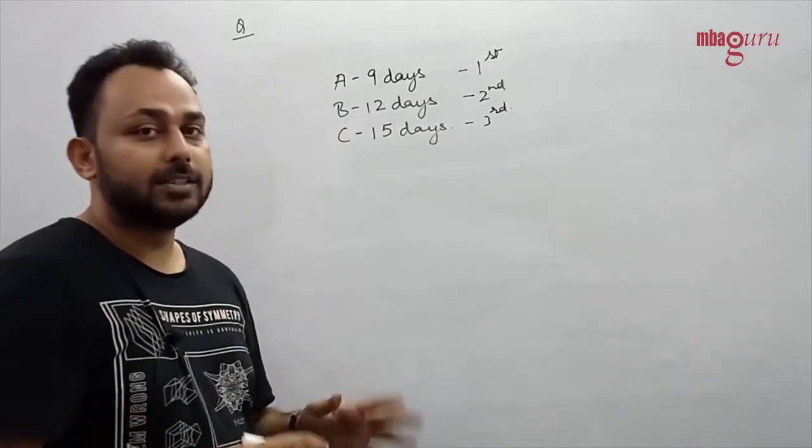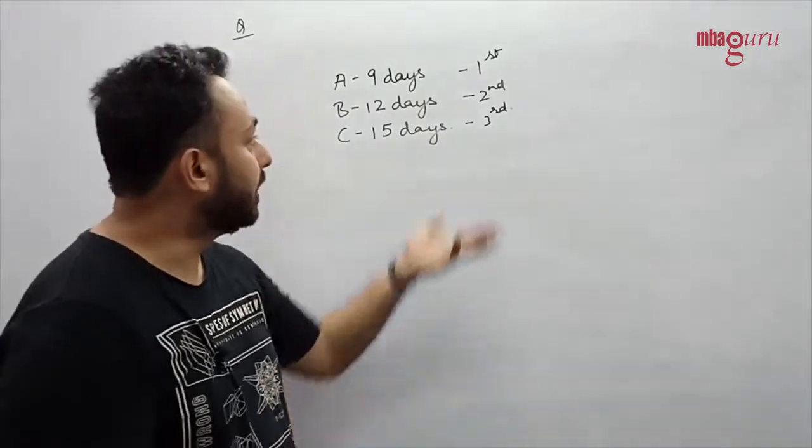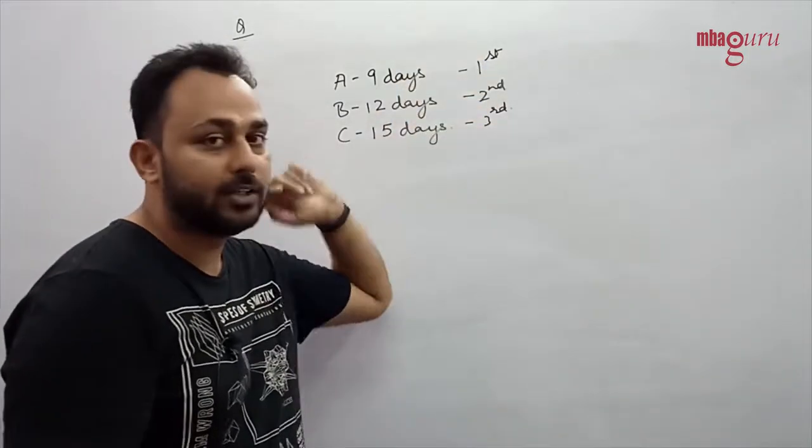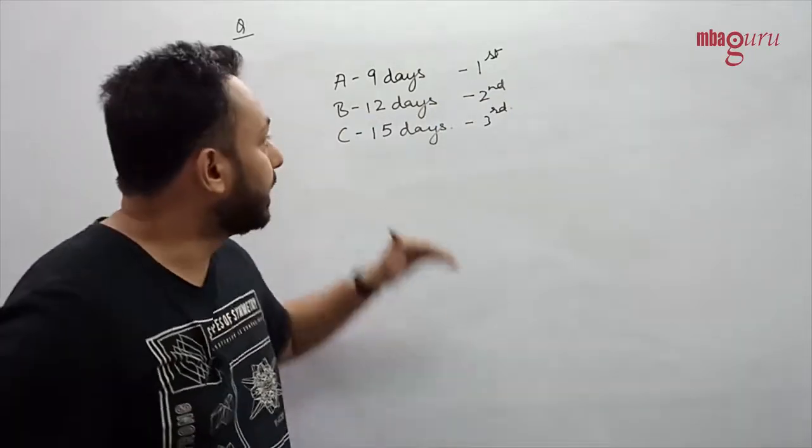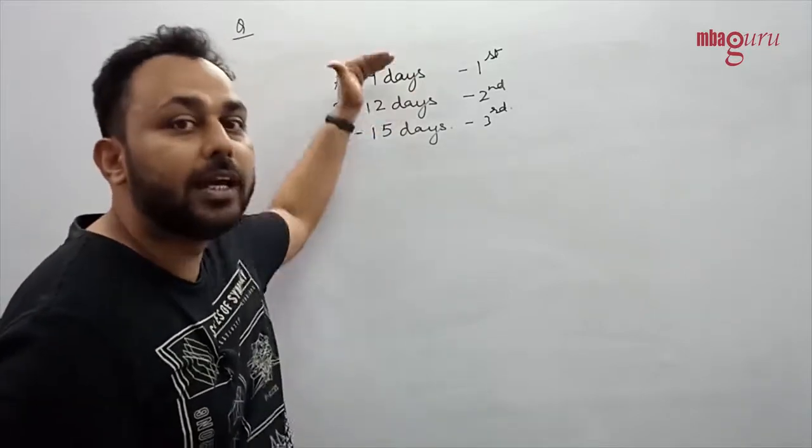Now in time and work, the entire concept is based on uniformity. Given that they are working at different rates on different days, we need to identify a time span wherein they are working uniformly, and that would be a set of three days.